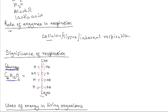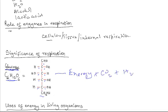Food substances that produce large quantities of energy when broken down include carbohydrates. When carbohydrates are digested, the final product is glucose, and when glucose is oxidized, a lot of energy is released. Lipids also contain a lot of energy, and when they are broken down chemically in living cells, they yield a lot of energy. It is glucose that is oxidized to release energy when chemical bonds are broken, with water and carbon dioxide as the other products.